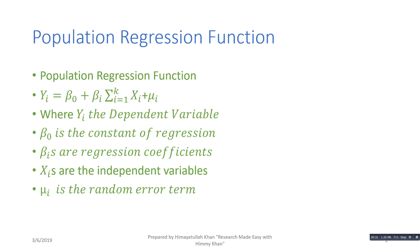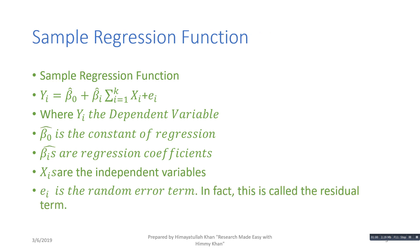y_i is equal to β₀ plus β_i, where the summation of i varies from 1 to k, times x_i, plus μ_i. Here y is the dependent variable — say, for example, consumption. β₀ is the intercept or constant of the regression, β_i's are the regression coefficients, x_i's are the explanatory or independent variables, and μ_i is the random error term.